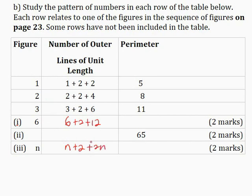Now the perimeter is found by finding the sum of the number of outer lines of unit lengths. So 1 plus 2 is 3, 3 plus 2 is 5; 2 plus 2 is 4, 4 plus 4 is 8; 3 plus 2 is 5, 5 plus 6 is 11; 6 plus 2 is 8, 8 plus 12 is 20. And n plus 2n is 3n, so this becomes 3n plus 2.